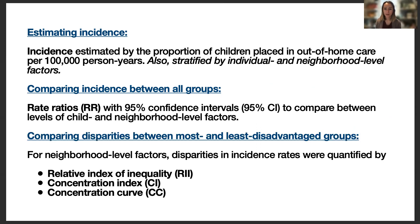One of the other novel aspects of this study is that we chose to use statistical measures often employed in studies of health disparities. We were only able to use these for the neighborhood level factors, because most of them make comparisons between the most and least disadvantaged groups, so the variables need to be orderable. The three measurements we used were the relative index of inequality, the concentration index, and the concentration curve.